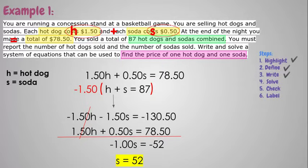So now we have to find hot dogs. So you're going to go back to your original two equations, and you could choose either one. I try to choose whichever one looks a little bit easier to work with. So in this case, I'm going to use the h plus s equals 87. I'm going to replace my s with 52 because that's what we solved for, and that's what we know. And now I'm going to solve for h. So this is a one-step equation. You would just subtract 52 from both sides, and you get h equals 35.